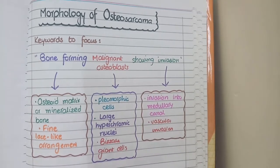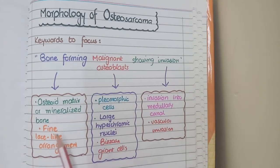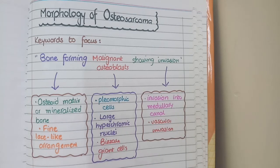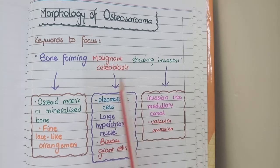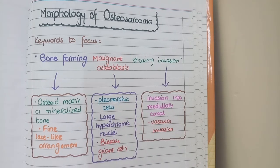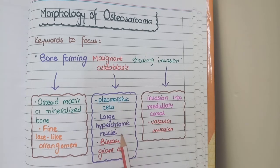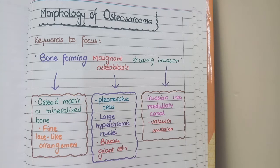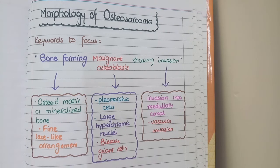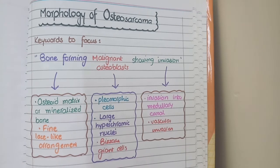The first keyword is bone forming — on microscopy you will see osteoid matrix or mineralized bone in a fine lace-like configuration. The second keyword is malignant osteoblasts — you will see pleomorphism (difference in size and shape of cells), large hyperchromatic nuclei, and the presence of bizarre giant cells.